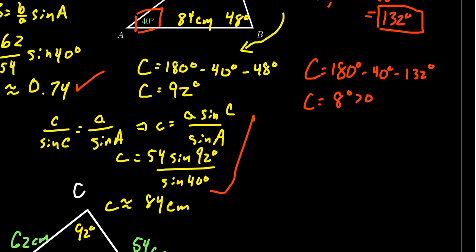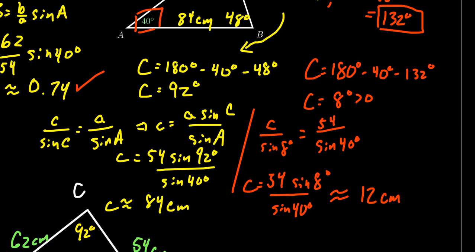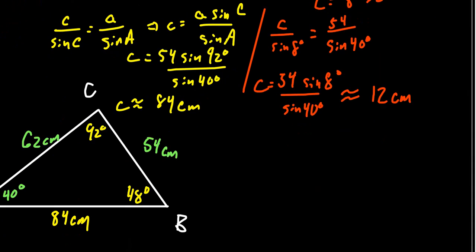Once we have angle C as 8 degrees, we use the law of sines again to find little c. We set up c/sin(8°) = 54/sin(40°), using the same original values for a. Little c becomes 54 × sin(8°) / sin(40°). Using the calculator in degree mode, 54 times sine of 8 degrees divided by sine of 40 degrees gives approximately 12 centimeters.